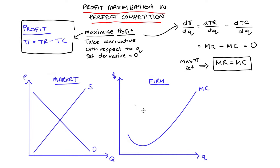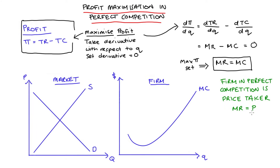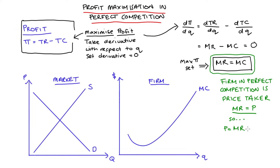For our perfectly competitive firm, however, when they produce and sell an additional unit, the additional revenue they get — their marginal revenue — is always just equal to the price. That's because the firm in perfect competition is a price taker; they take the price determined in the market as given. So marginal revenue equals price for the perfectly competitive firm. This means our profit maximizing condition extends to: price equals marginal revenue equals marginal cost.